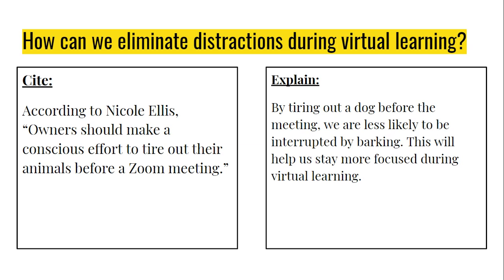But the quote itself doesn't prove my point. I also have to explain how it supports my answer. So my explanation sounds like this: 'By tiring out a dog before the meeting, we are less likely to be interrupted by its barking. This will help us stay more focused during virtual learning.' That explanation now proves how the quote supports eliminating distractions.